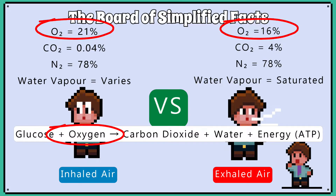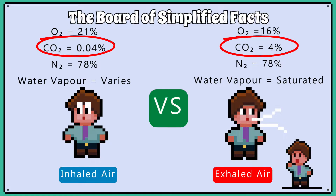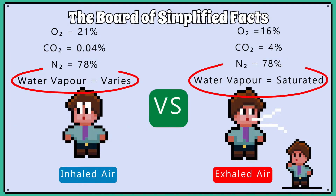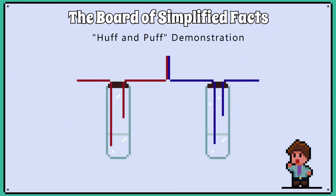Our bodies don't use up all 21% of the oxygen because they're just not that efficient. Carbon dioxide levels increase to 4% in exhaled air because carbon dioxide is produced by aerobic respiration. Water vapour is saturated in exhaled air because the alveoli are moist and the air is warmer, so it can hold more moisture.